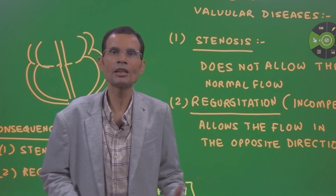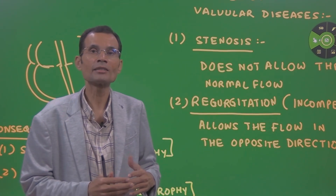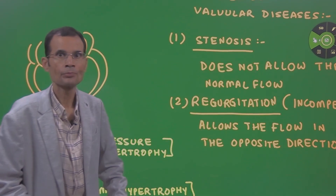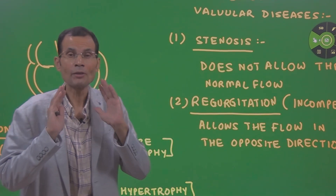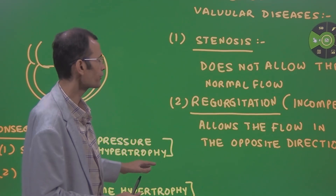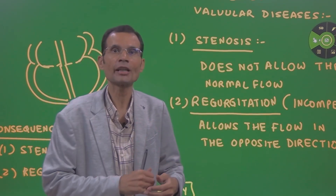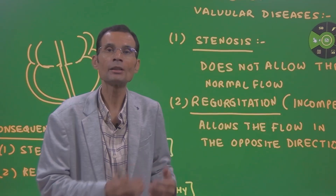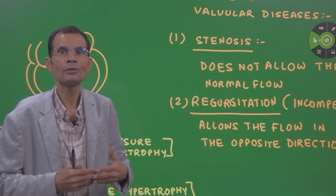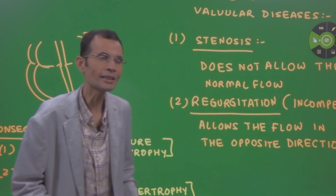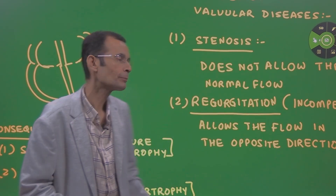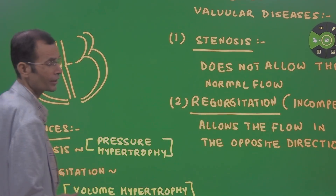The second type is a regurgitant valve. The function of the valve — to close and prevent the backflow of blood — does not happen in the condition of regurgitation. When the valve is regurgitant or incompetent and is supposed to be closed, it does not close properly, and therefore it allows the blood to flow in the opposite direction — regurgitation, backflow of blood into the previous chamber. So: stenosis is when the valve is supposed to be open but cannot perform its function properly; regurgitation is when the valve is supposed to be closed but cannot perform its function properly.